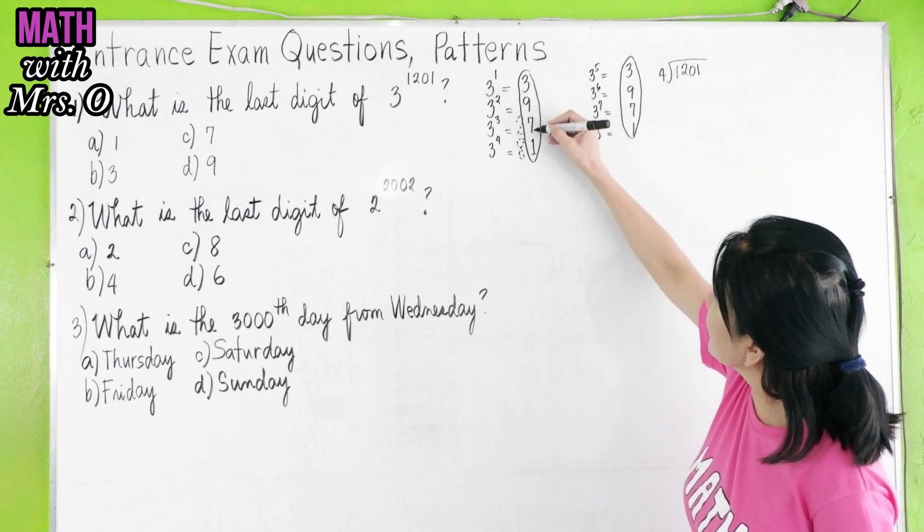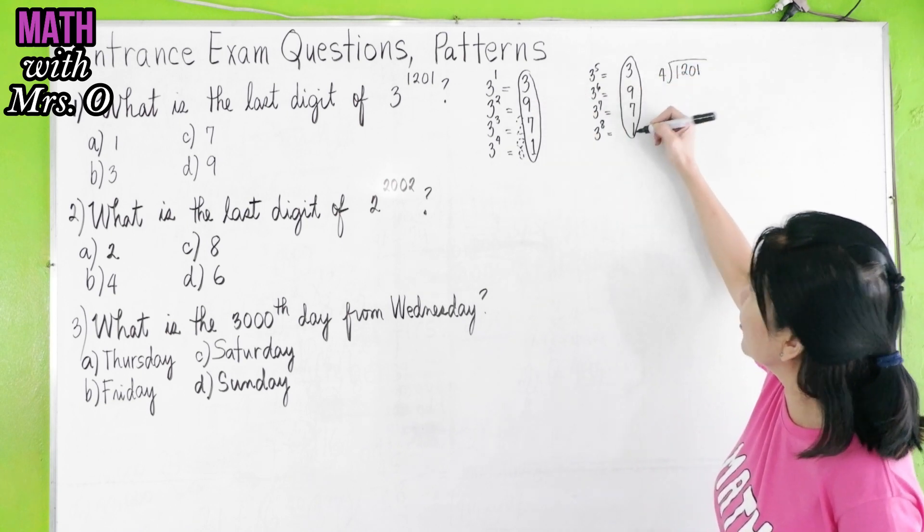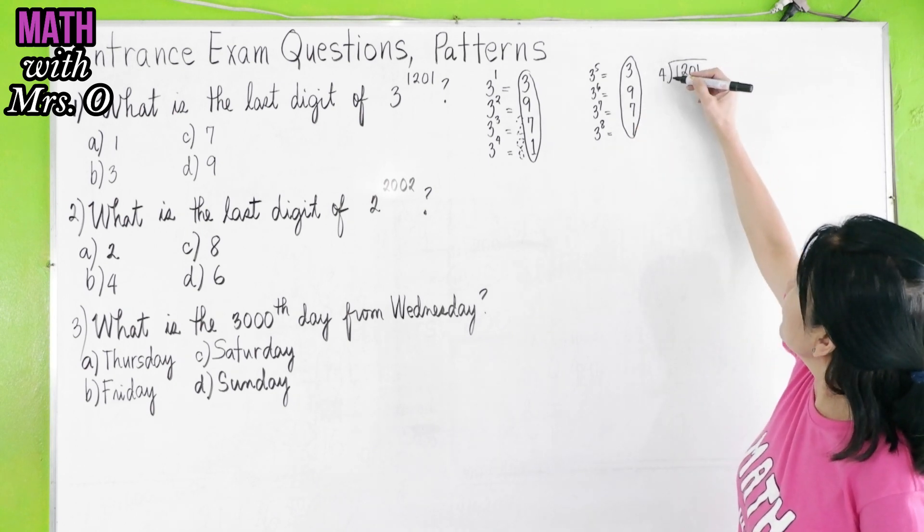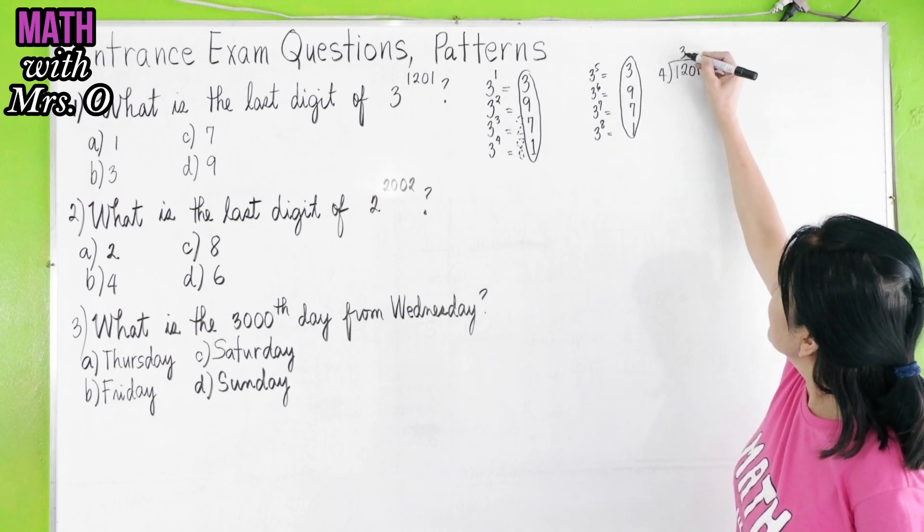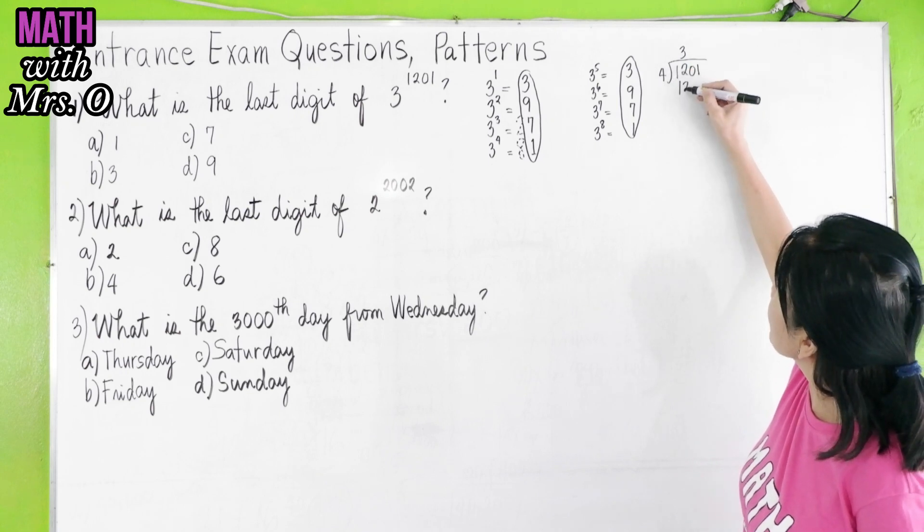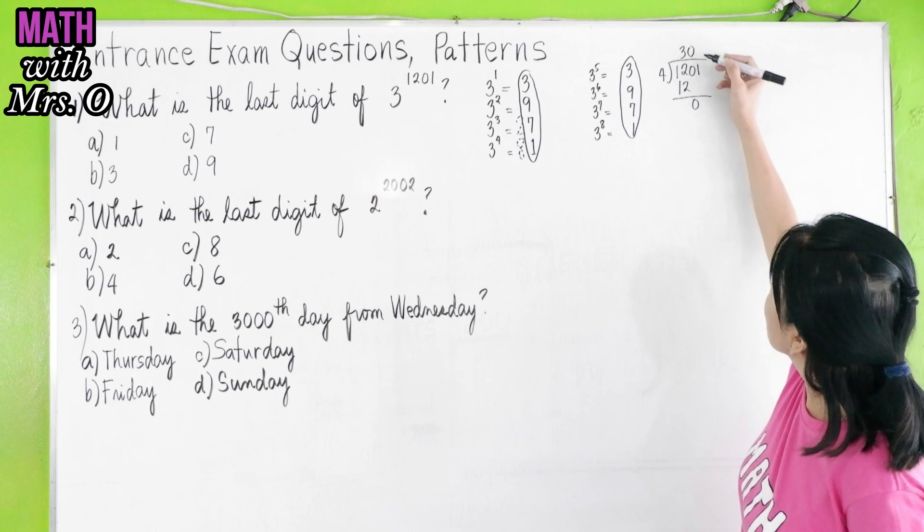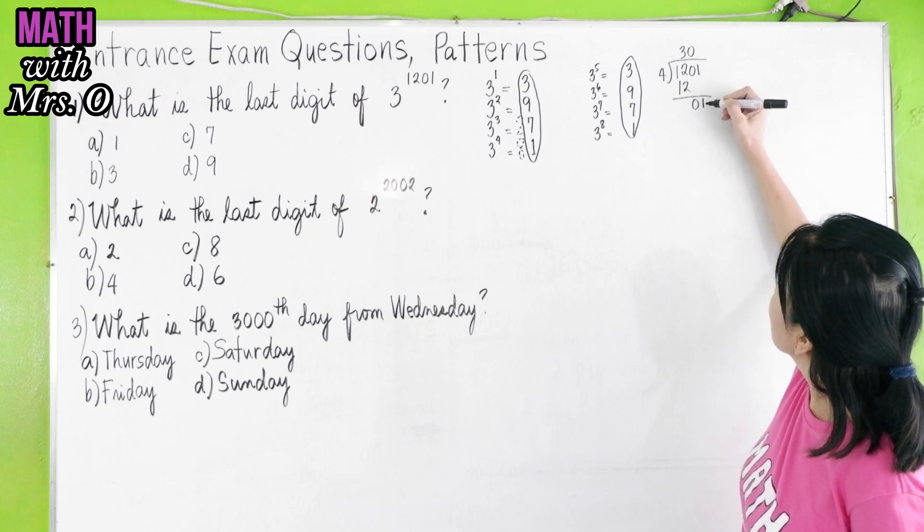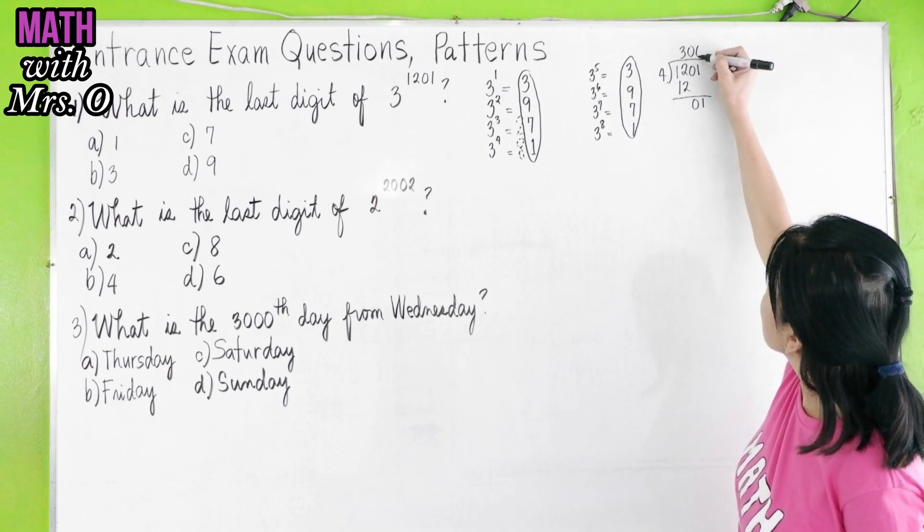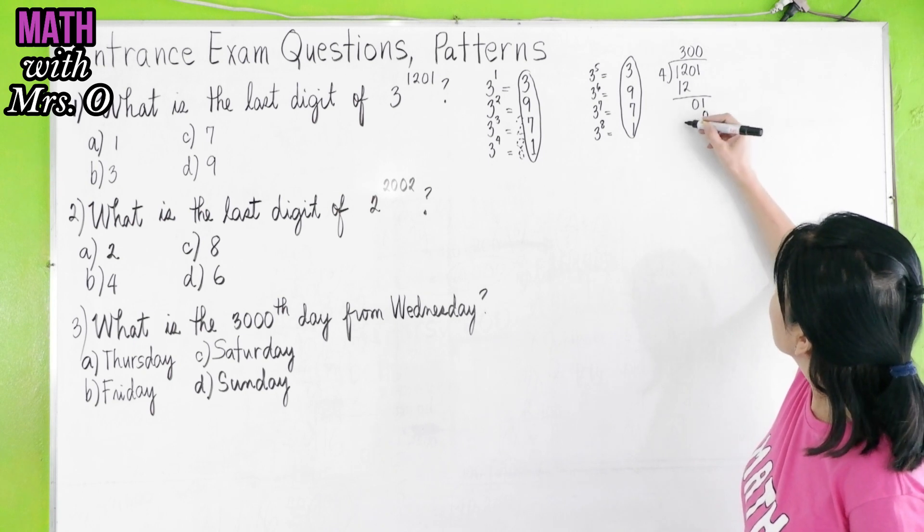12 divided by 4 is 3. 3 times 4 will give us 12, and then this is 0, so that would be 0. Bring down 1. 1 divided by 4, so that would be 0 again. We have a remainder 1.